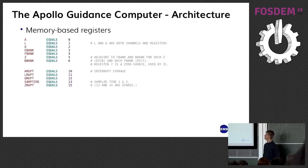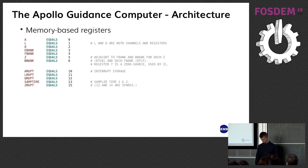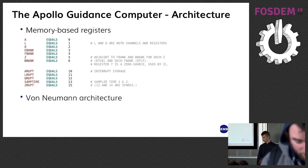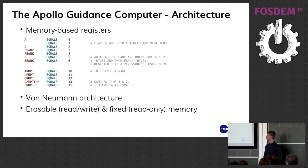The most important thing to know about the AGC's registers is that there was no meaningful concept of a register. All data was mapped to memory locations and in the assembly, registers were just defined as aliases to memory locations. Data and code share the same memory, so this is a von Neumann architecture. However, the memory was split into erasable and fixed memory, and code is generally in fixed.